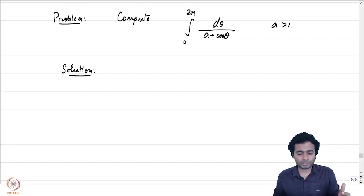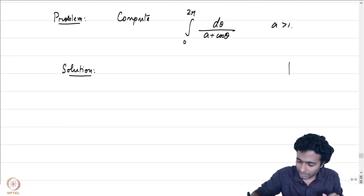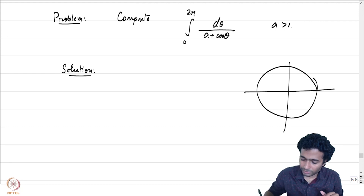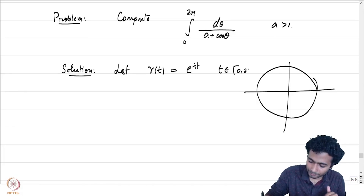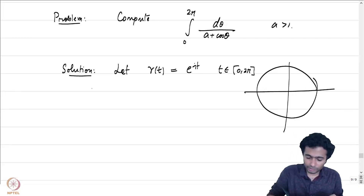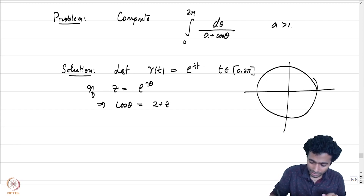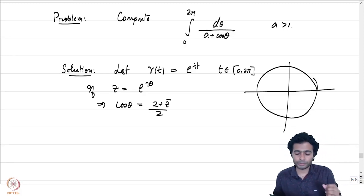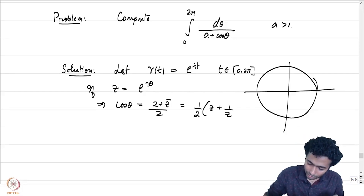However, let us reduce this integral to an integral on the complex plane. To do that, let us look at the unit circle: let γ(t) = e^(it) for t in [0, 2π]. On the unit circle, if z = e^(iθ), then cos θ = (z + z̄)/2.